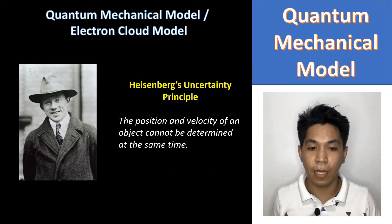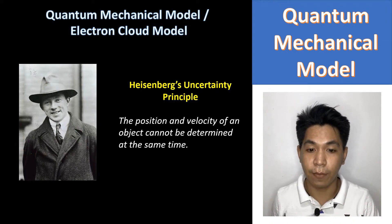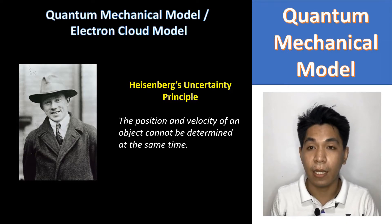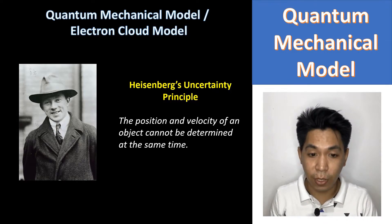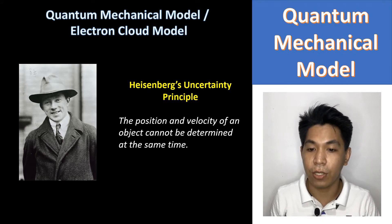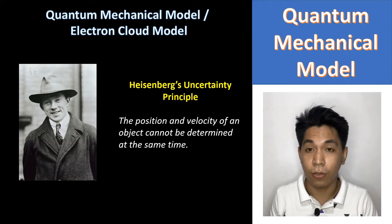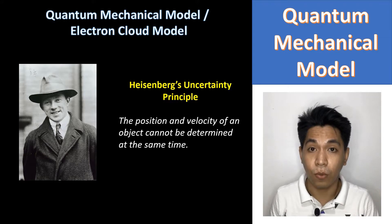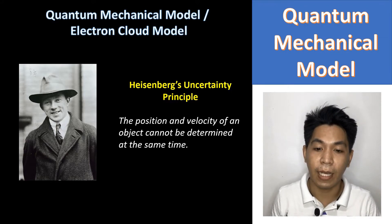According to the Heisenberg's Uncertainty Principle, the position and velocity of an object cannot be determined at the same time. This principle is found to be applicable to electrons, which means the position of electrons are uncertain. Or to simply say it, we cannot identify the exact location of electrons.